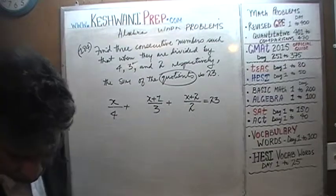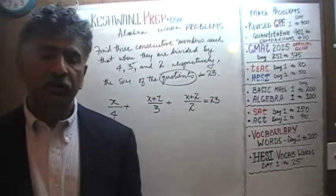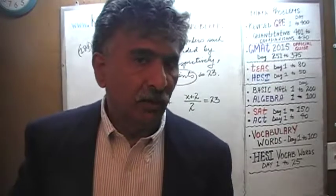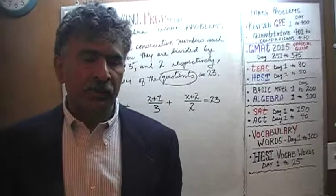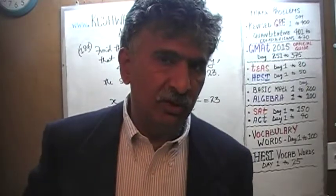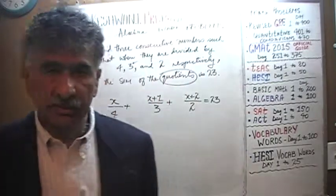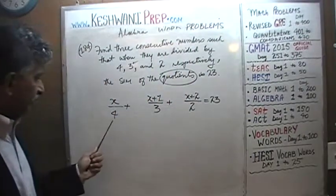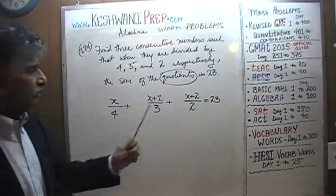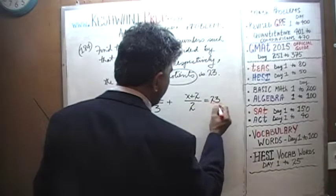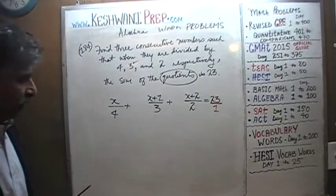The first thing we're going to do is make sure that our denominators are the same — that we have a common denominator. As long as we have the common denominator, we can ignore it. The common denominator will cease to have any significance as long as every term has the same denominator. This one has a denominator of 4, this one 3, this one 2, and the right side has a denominator of 1. How can we find a common denominator? The least common denominator, preferably.